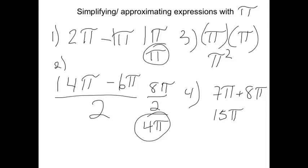If I multiply 7 by approximately 3 and 8 by approximately 3, I would get the same as 15 times approximately 3. If you don't believe me, get out your calculator and try it.